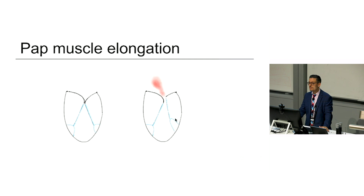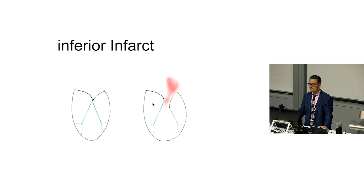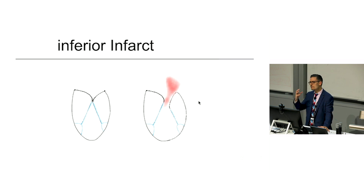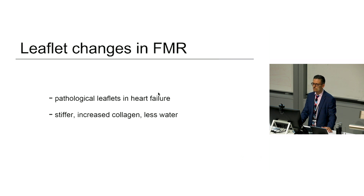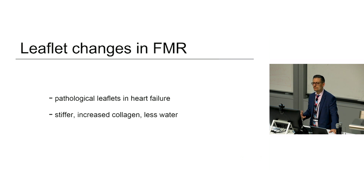Papillary muscle elongation — this papillary muscle has not decreased in size in systole as it should. This is not very common, but we do see it, and the leaflet height may arrive a few millimeters higher than the other leaflet. With inferior infarction — the classic ischemic MR — there's a posterior infarct in the PDA territory, the posterior medial papillary muscle is pulled outwards, and you get a posteriorly directed jet of MR. There are also leaflet changes in functional MR; at autopsy, leaflets are stiffer, with increased collagen, less water, and thicker.